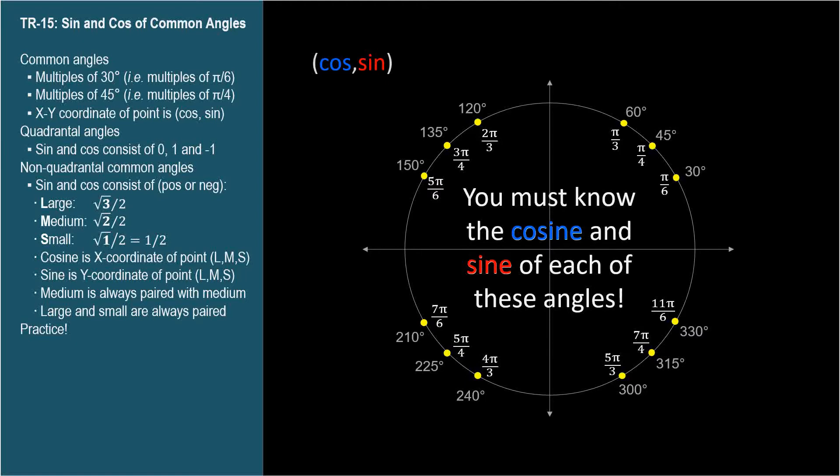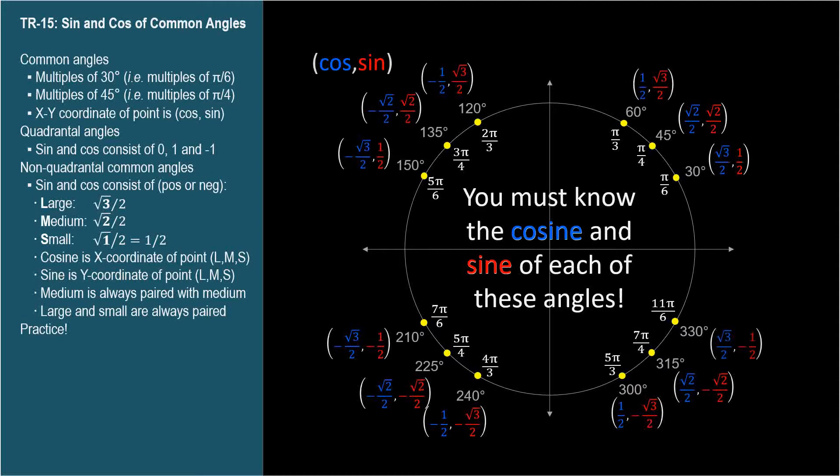I'm going to show you their cosines and sines, but don't panic. There's an easy way to know these without memorizing them. Due to symmetry across both axes, each of these twelve angles have coordinate pairs consisting of just three numbers, though they can be positive or negative depending on the quadrant.